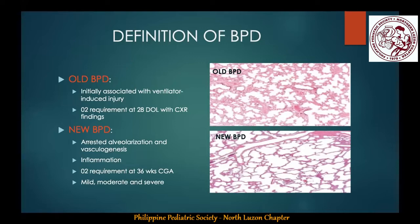When we talk about old BPD, we talk about oxygen requirement at 28 days of life with radiographic findings consistent with airway injury, inflammation, and parenchymal fibrosis due to prolonged mechanical ventilation and oxygen toxicity. New BPD, on the other hand, is accorded to infants who require oxygen at 36 weeks post-conceptual age. Its histology is characterized by extensive inflammation, decreased septation, alveolar hypoplasia, leading to fewer and larger alveoli and lesser surface area for gas exchange.